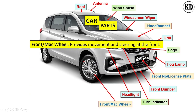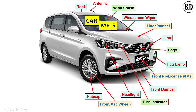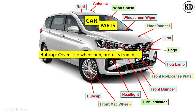The next component name is the front wheel, also called a mag wheel. Its function is to provide movement and also control to the steering. The next component name is the wheel hub, and its function is to cover the wheel from dust or mud.